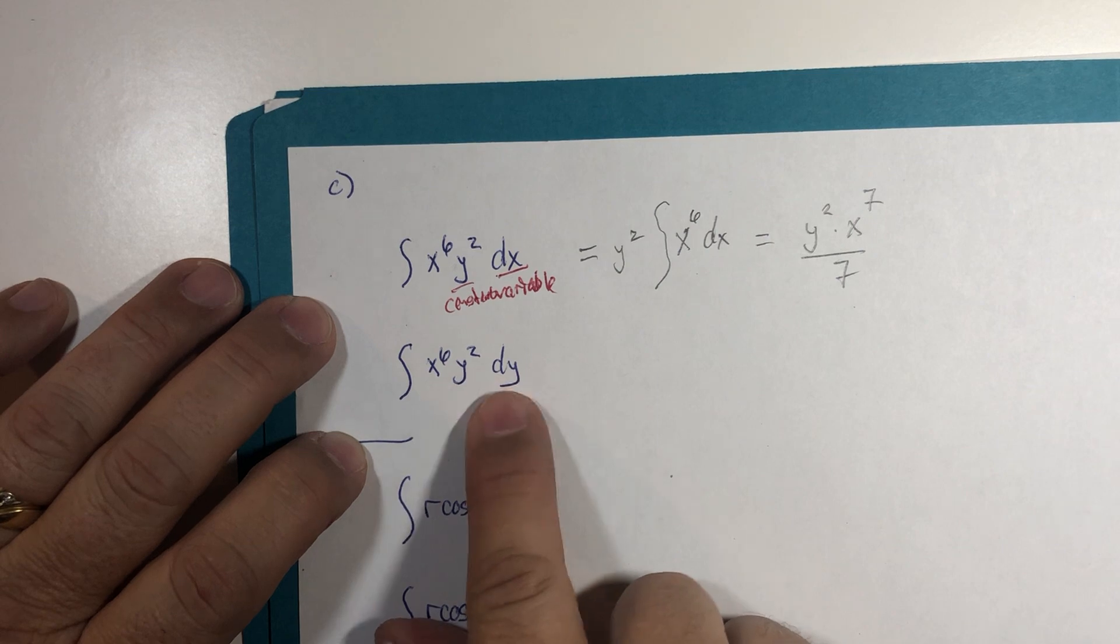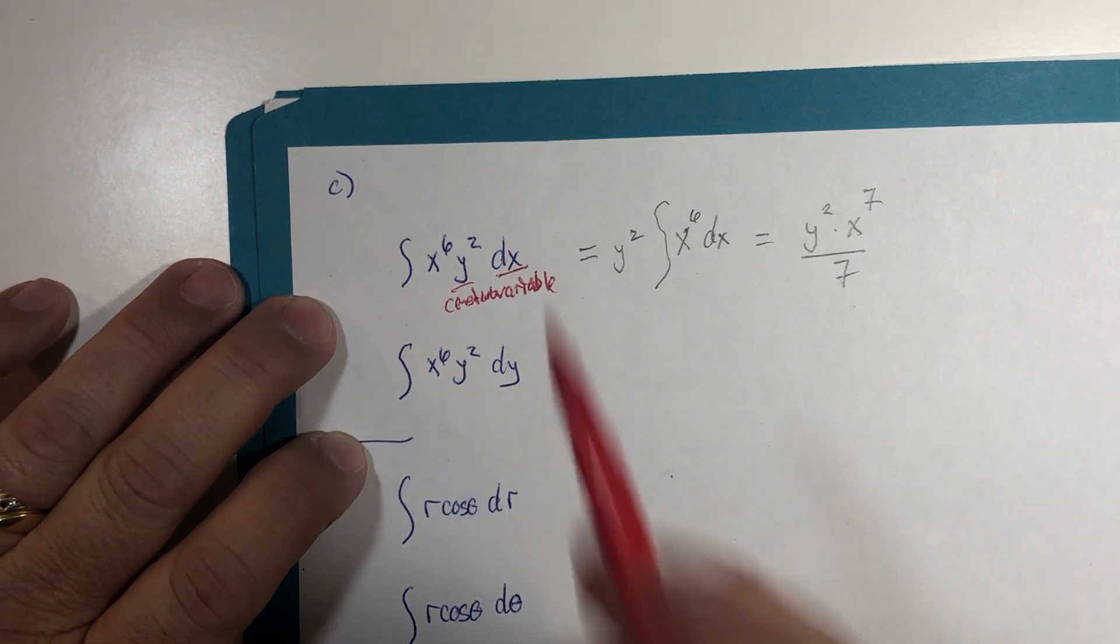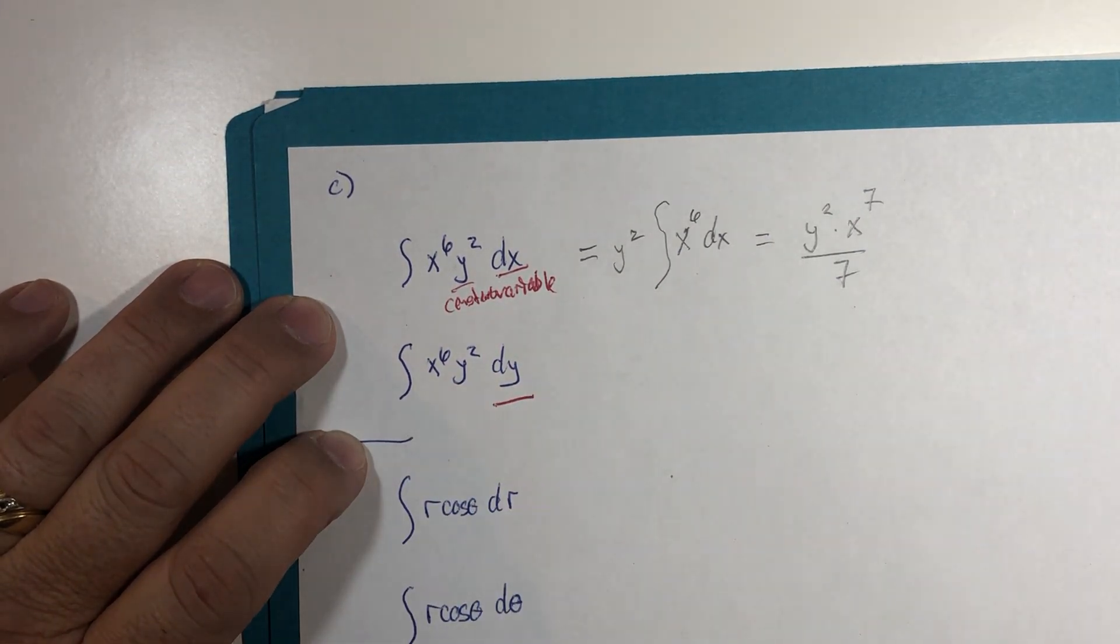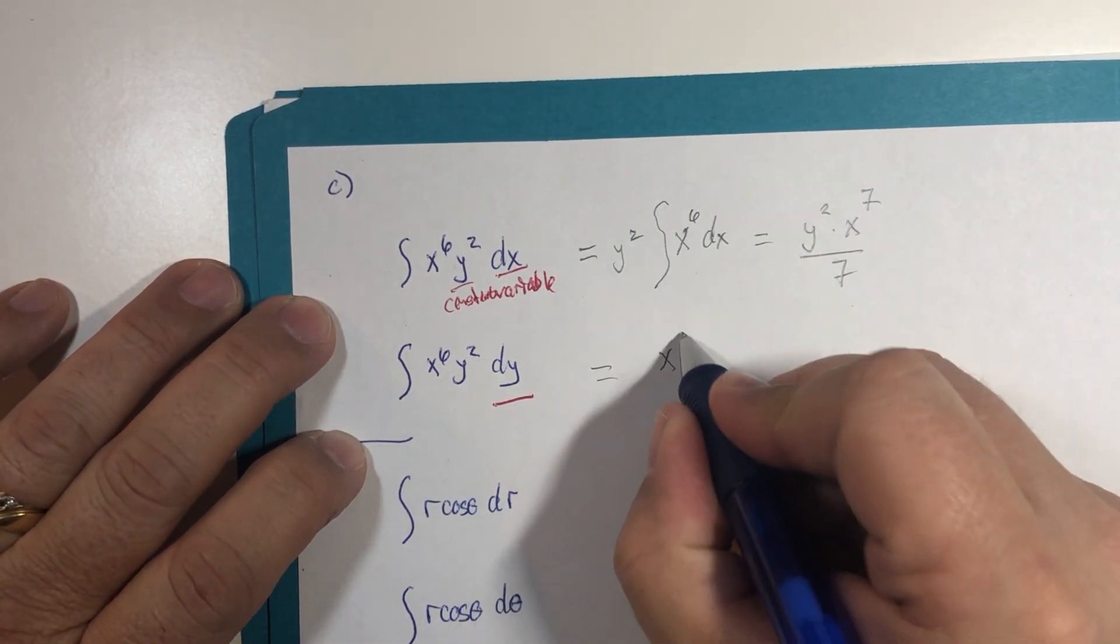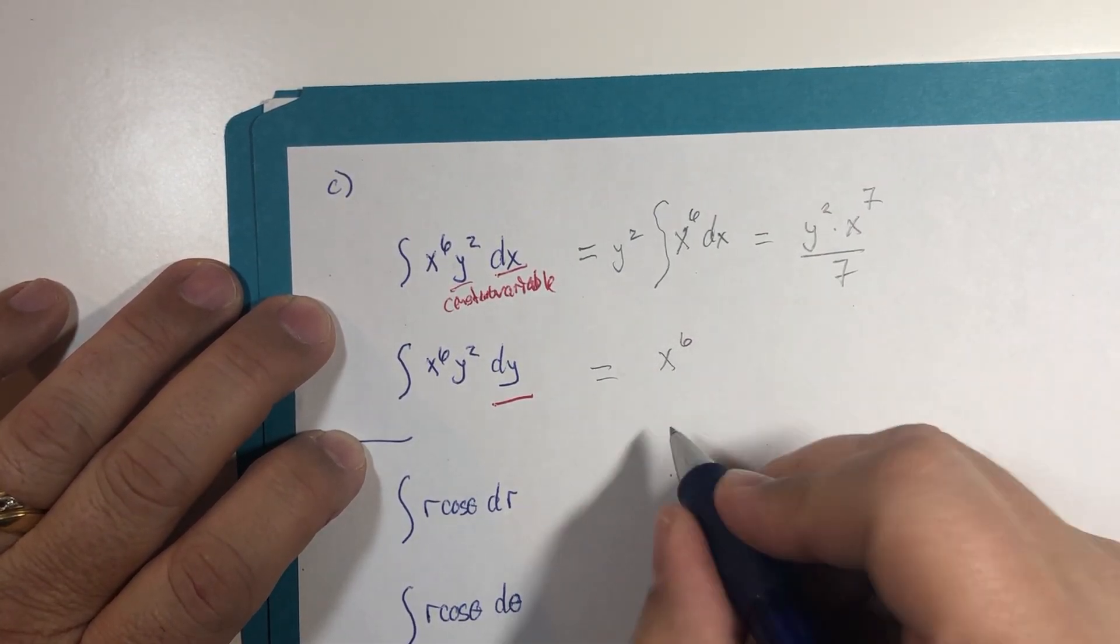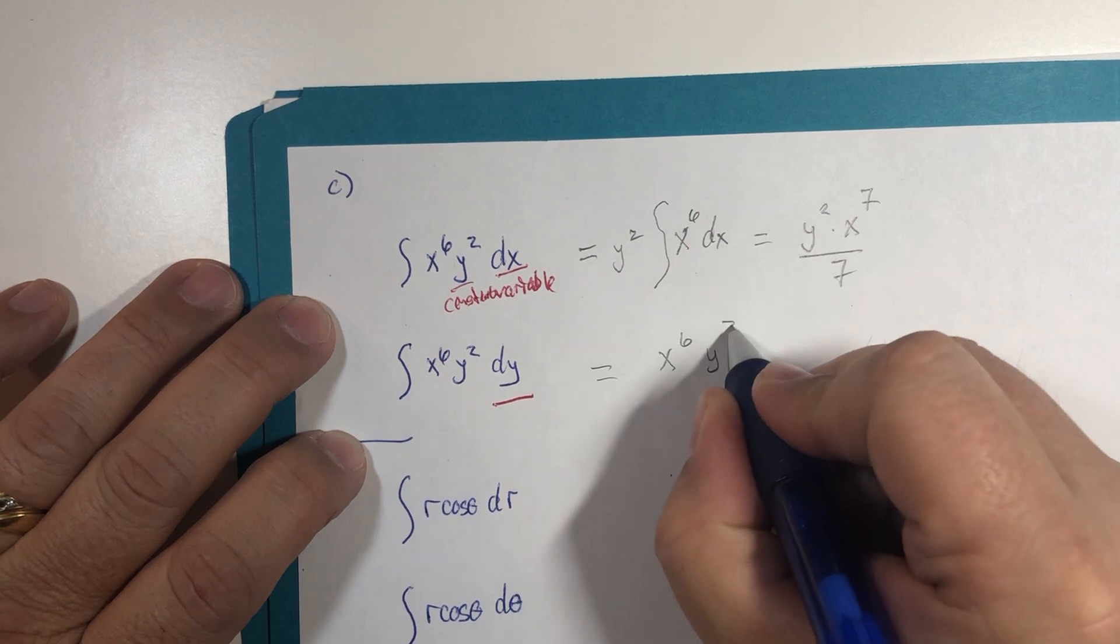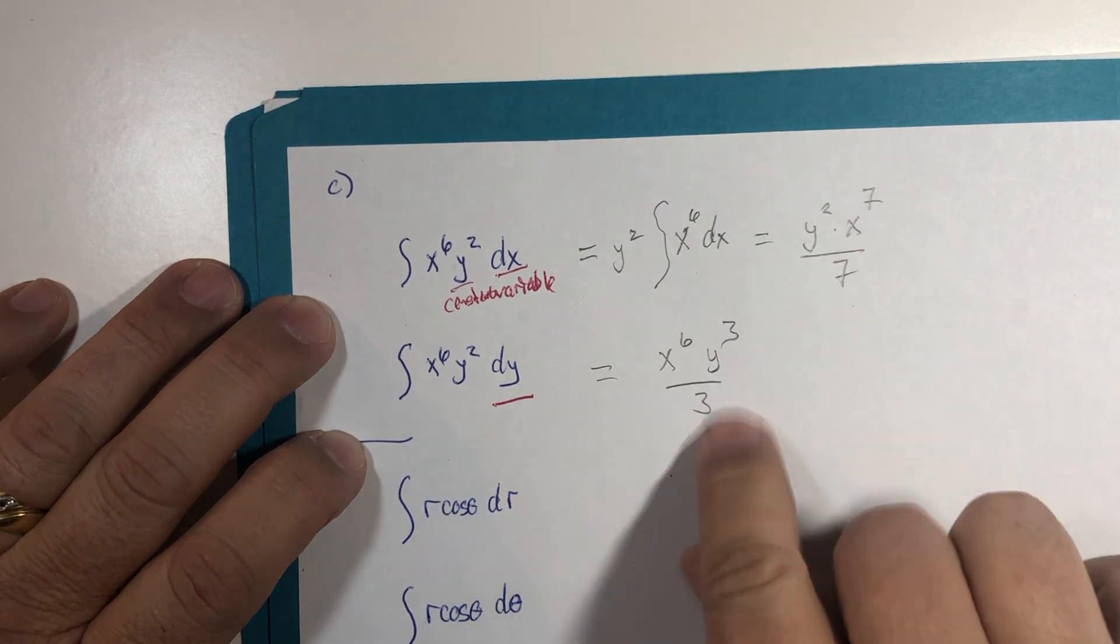If y is the variable, then that means x is the constant. So we have the constant here and we would be integrating with respect to y: y cubed over three plus c.